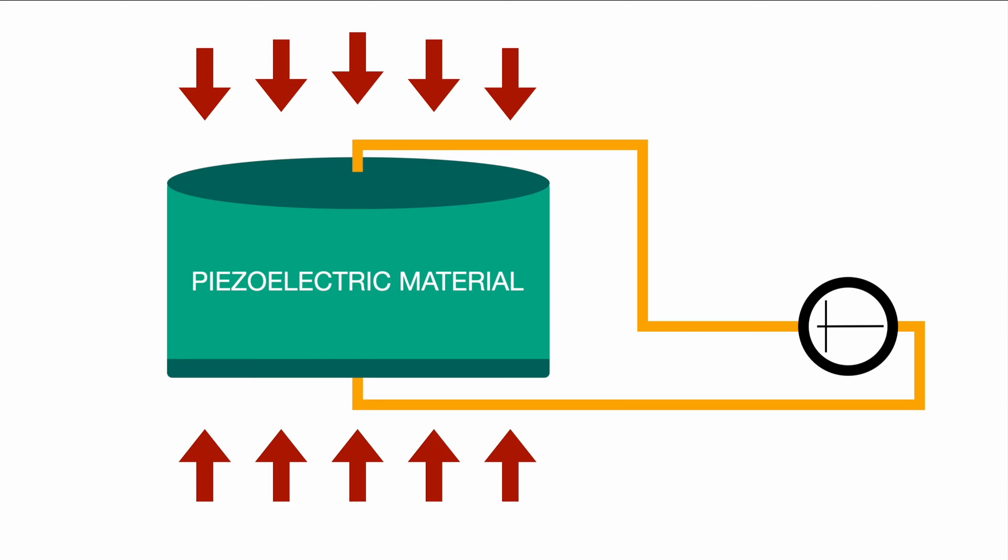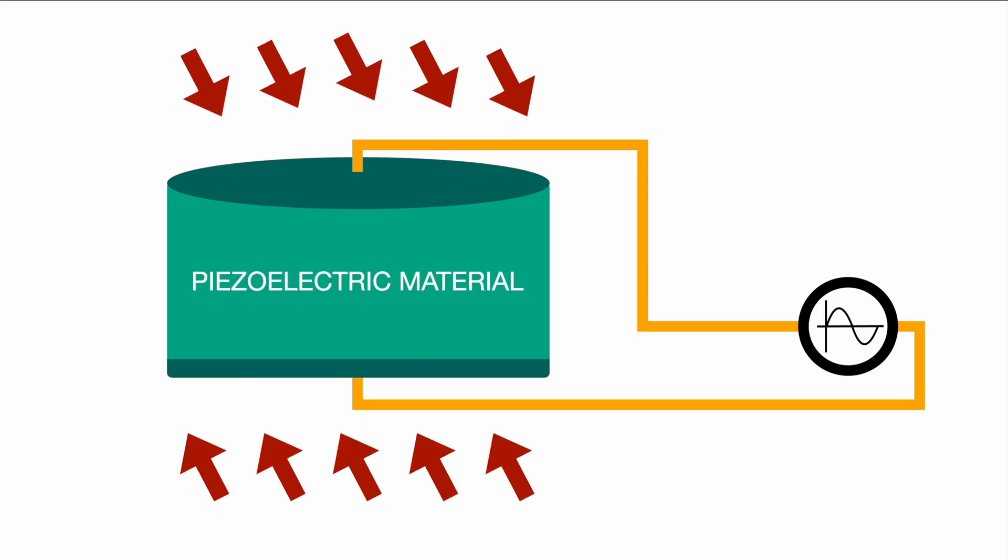But obviously coming back to the speaker you have an opposite use case by replacing the voltmeter with an actual power source. Especially if you apply for example a sine wave or any other sort of wave you could cause the piezoelectric material to contract or depending on the polarity to expand and thereby you could basically translate an electric signal into a physical into a mechanical signal. So the electrical signal is being translated into a mechanical signal through the piezoelectric material which is then transmitting this signal into the air which we then refer to as a sound.